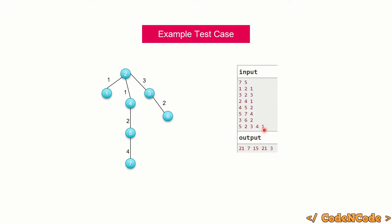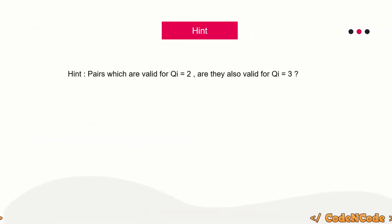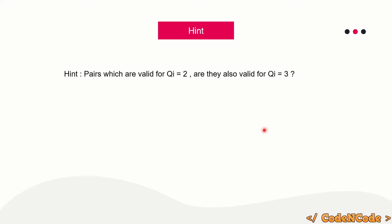Now let's see how we'll solve this problem. Ask yourself: pairs which are valid for qi = 2, are they also valid for qi = 3? Think about it. One more hint: try utilizing DSU — Disjoint Set Union.